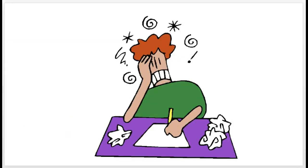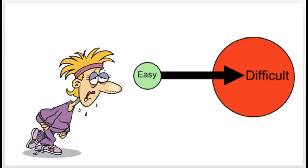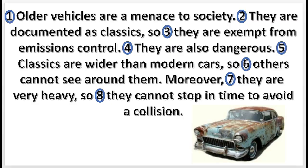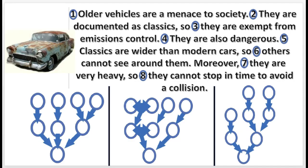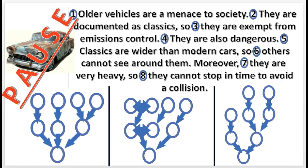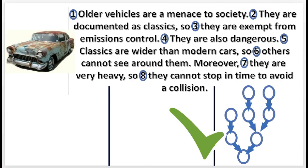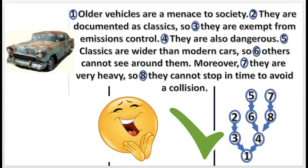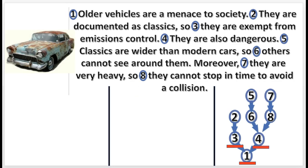Now you may want to get some scratch paper, because it's about to get more difficult. As we turn it up a notch, here we go! Here's another practice problem. Begin by selecting the correct diagram and press pause. That is correct. Now select the correct sequence and press pause. Congratulations, that's correct. The conclusion is supported independently by 3 and 4. 2 supports 3. Also, 6 and 8 support 4 independently. 5 supports 6, and 7 supports 8.